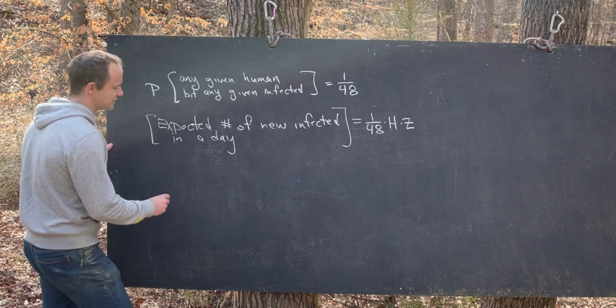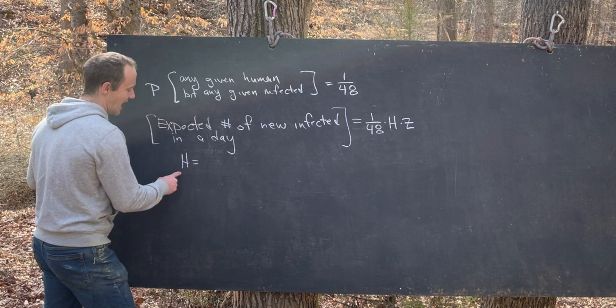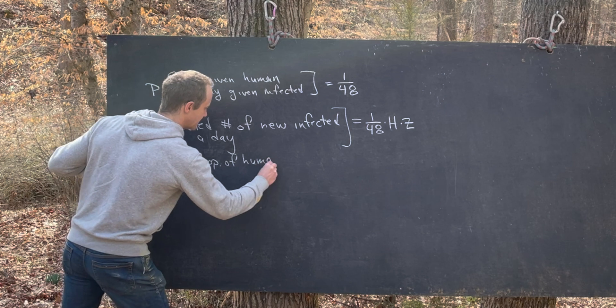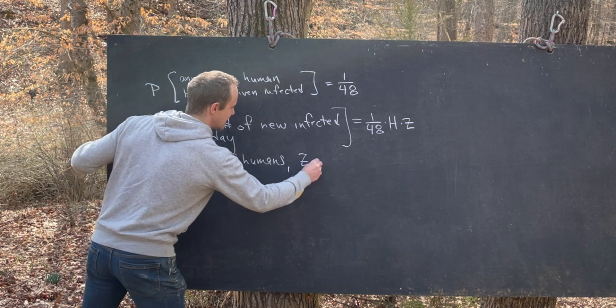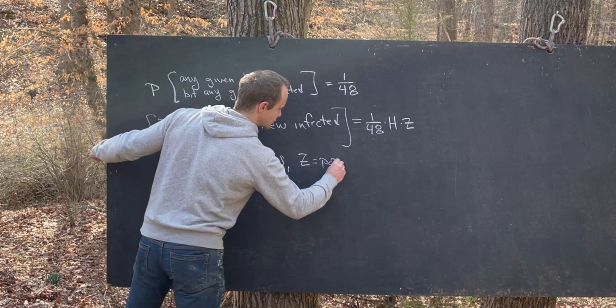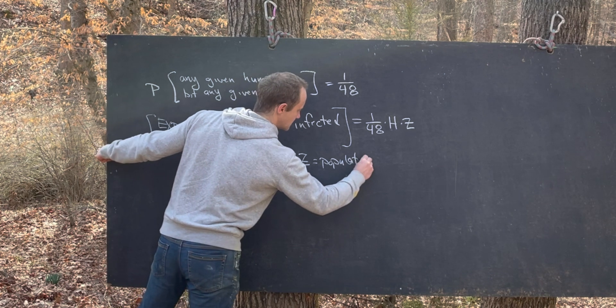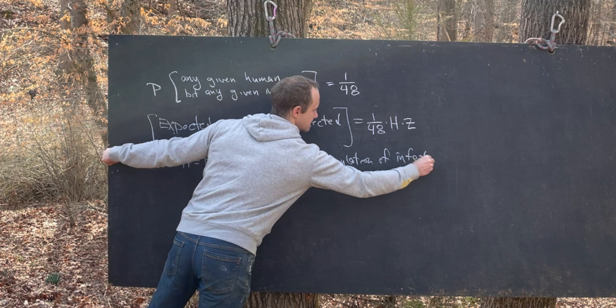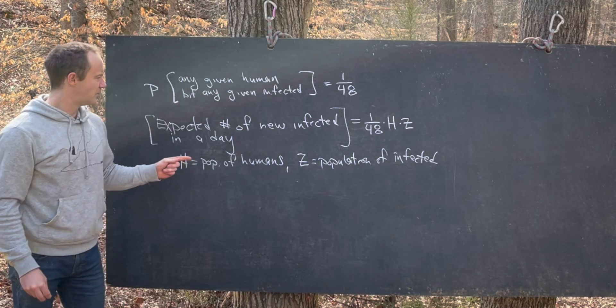Where, let's maybe introduce some notation. So H is the current population of humans. And Z is the current population of infected. Okay, great.